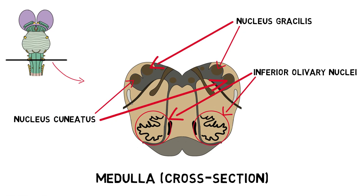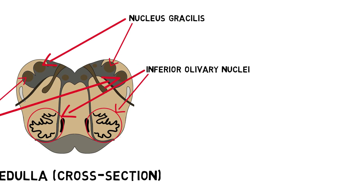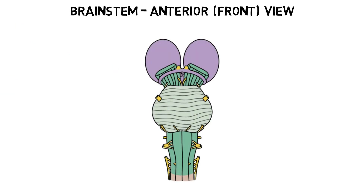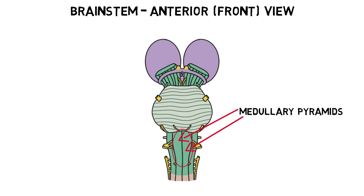A number of cranial nerve nuclei are also found in the medulla. The medulla contains a number of tracts that pass from the brainstem to the spinal cord and vice versa. The corticospinal tract and corticobulbar tracts, important tracts for movement, form triangular bundles of fibers in the medulla that create ridges on the outside of the brainstem. These bundles and ridges have been termed the medullary pyramids, and because of this, the corticospinal and corticobulbar tracts are often referred to as the pyramidal tracts.